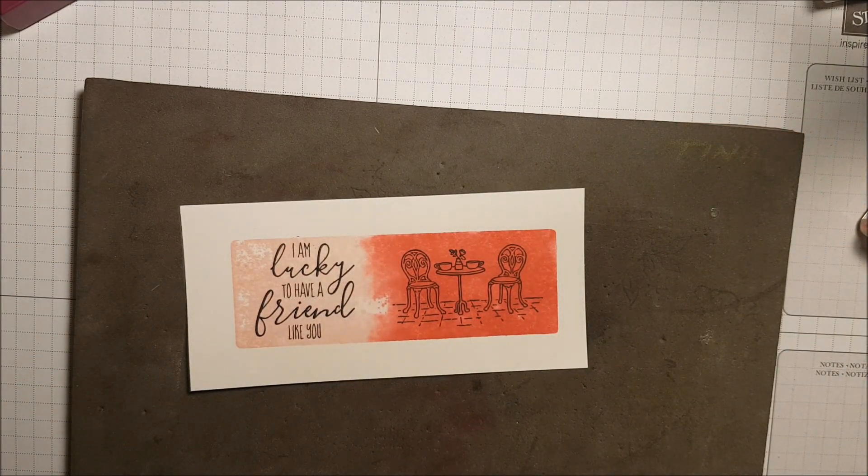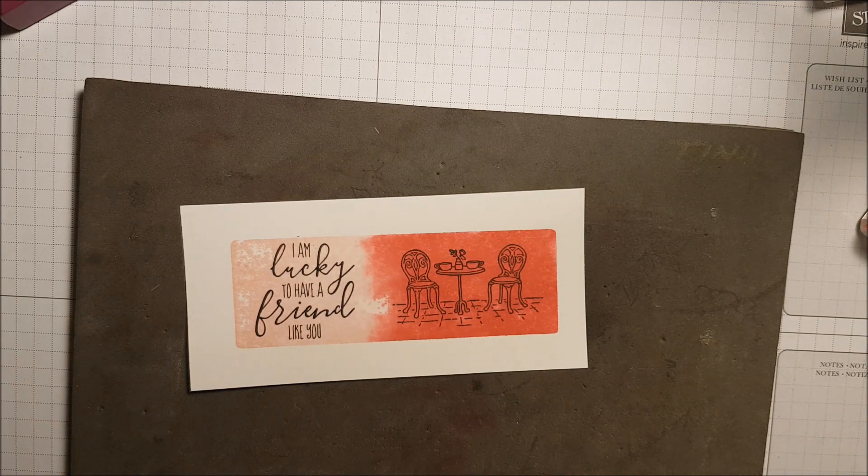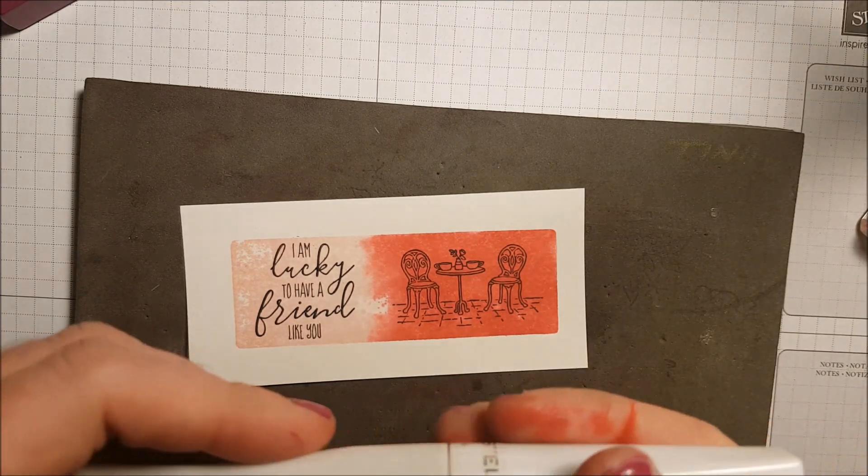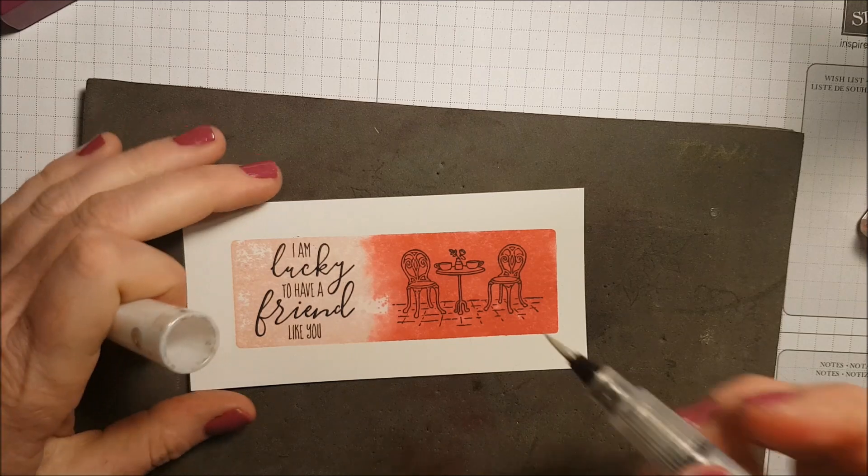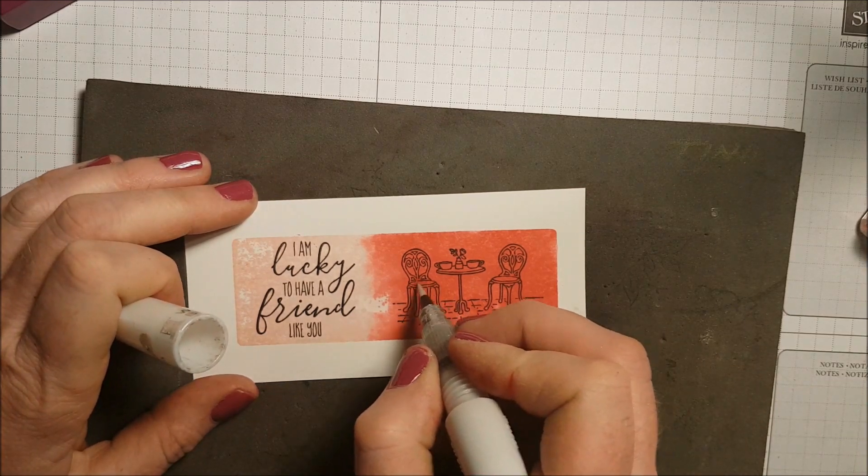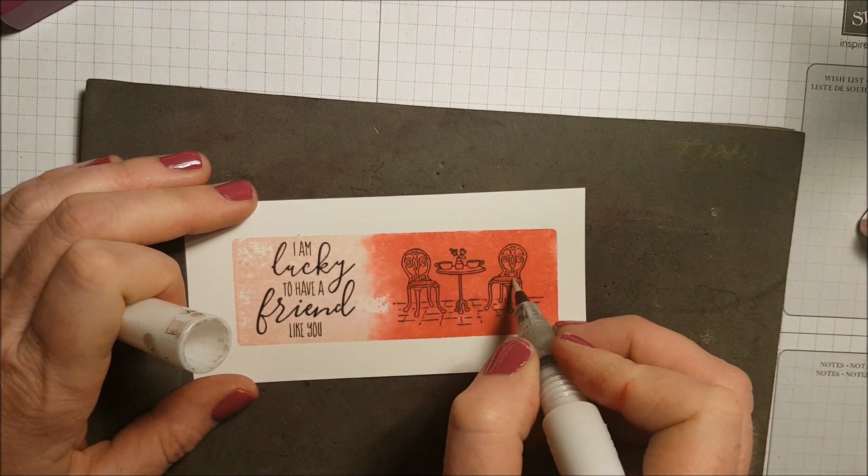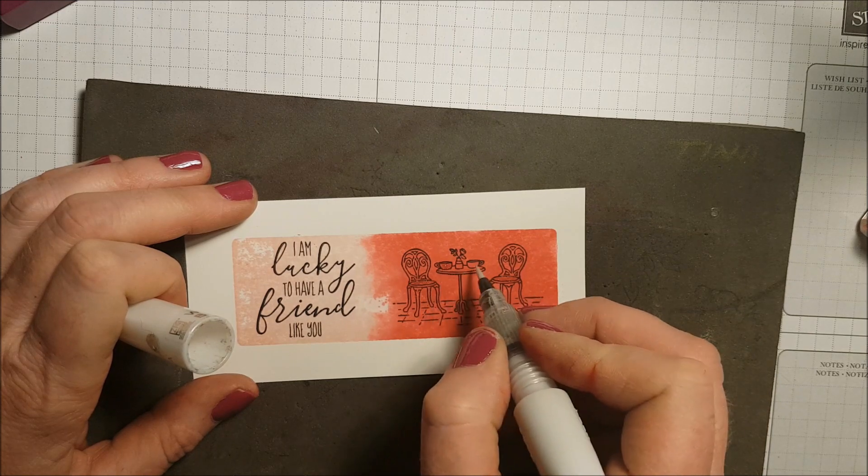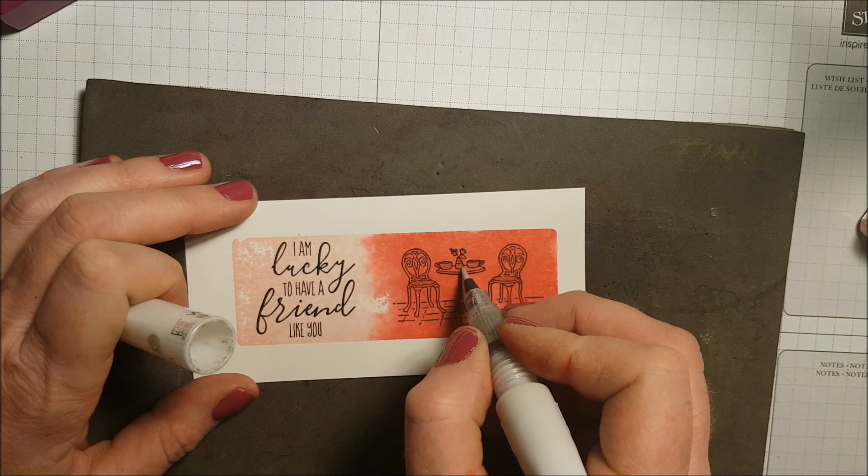So that clear block makes a really quick and easy background. I'm just taking my clear wink of stella and I'm adding just a touch of that glitter to the cups, the cushions, and the little vods and flowers, just to add a little Shazam.